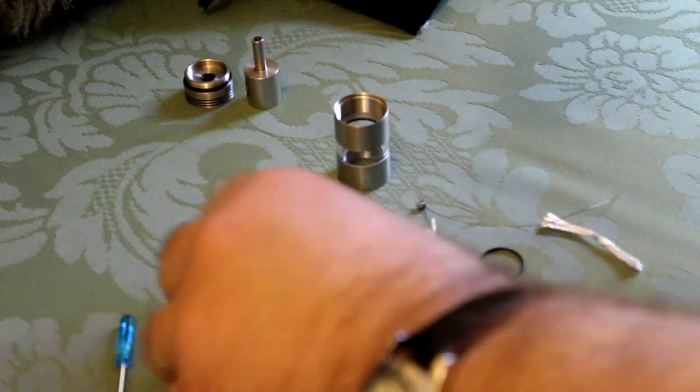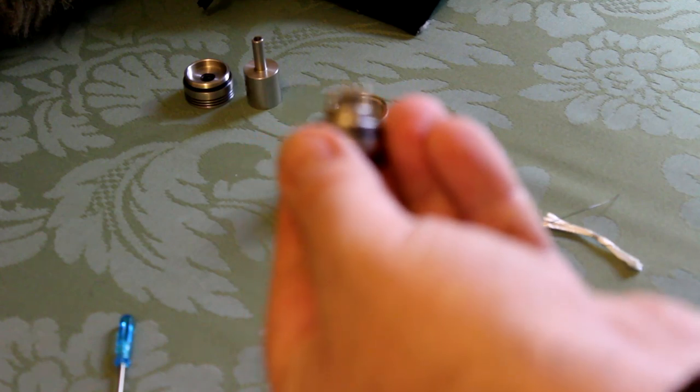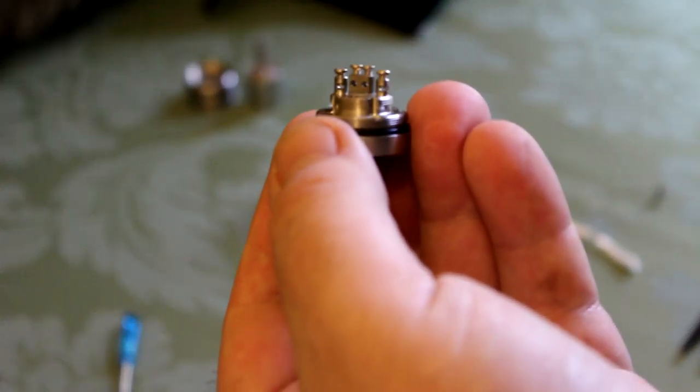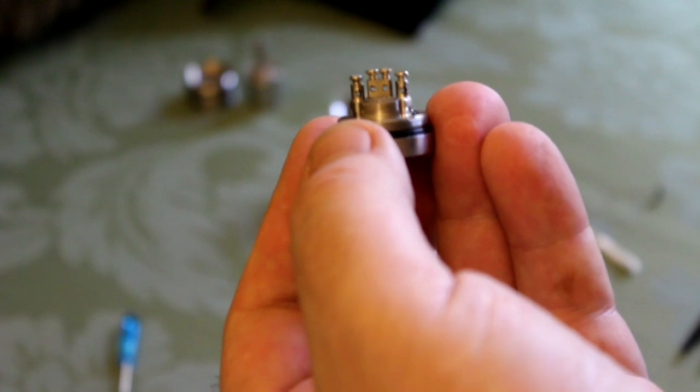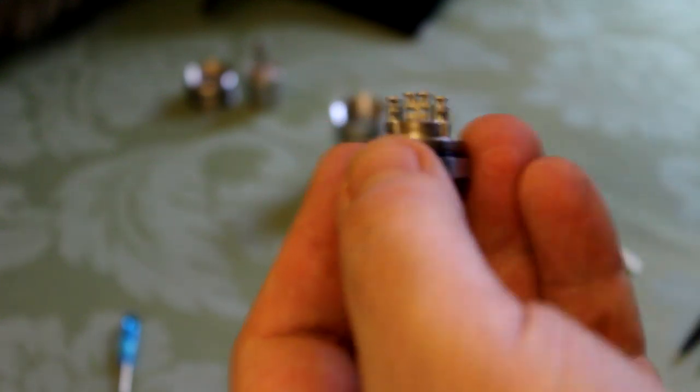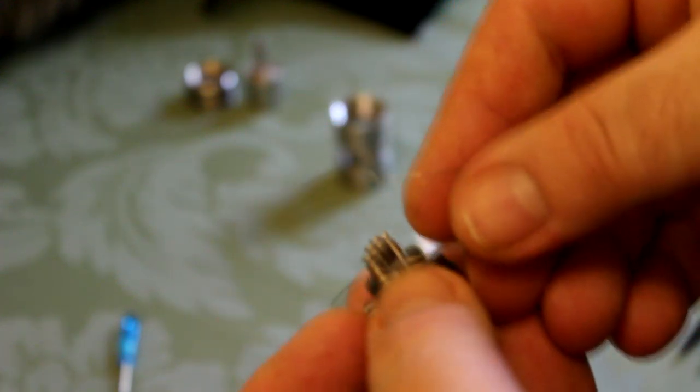First things first, you can see the little holes. I'm going to feed the wire into the negative post and then the second hole of the positive, so the coil actually sets over the airflow hole.